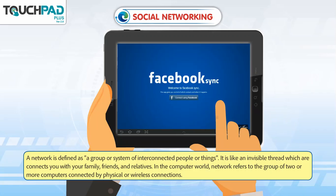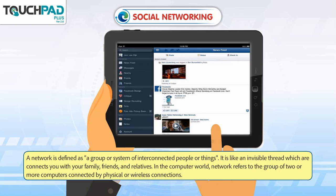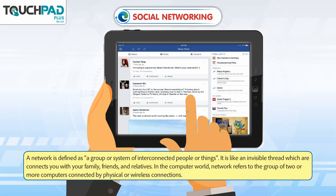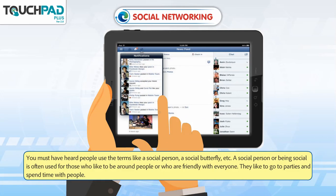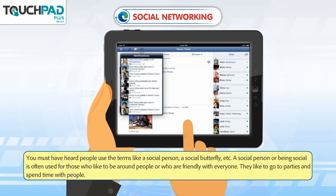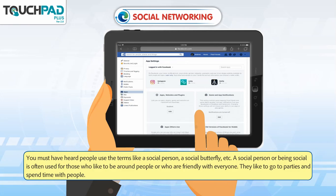In the computer world, network refers to the group of two or more computers connected by physical or wireless connections. You must have heard people use the terms like a social person, a social butterfly etc. A social person or being social is often used for those who like to be around people or who are friendly with everyone. They like to go to parties and spend time with people.